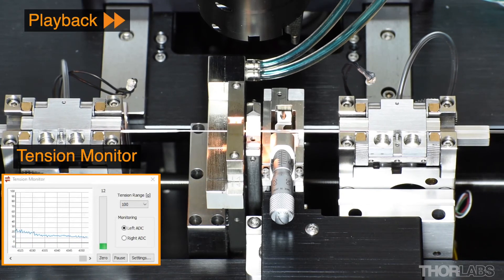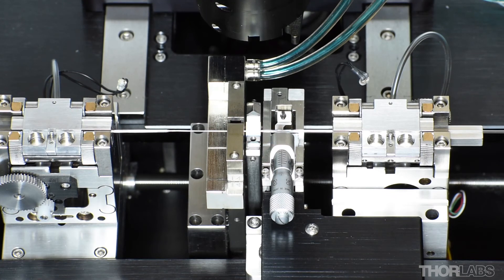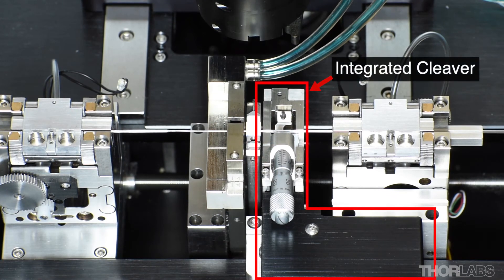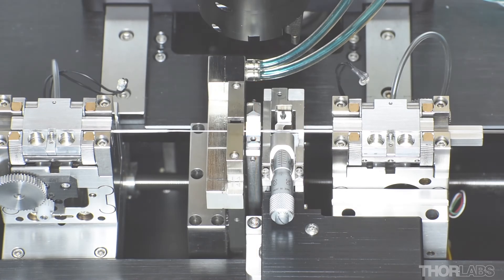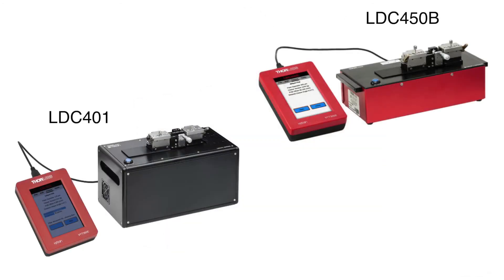Once the bundle taper is complete, the final step will be to cleave the waist to form the output end of the bundle. If the GPX is equipped with an integrated cleaver, it can be used to cleave the fiber bundle. For GPX 3400 or GPX 3600 without an integrated cleaver, an external cleaver, such as LDC 401 or LDC 450B, can be used to make the cleave.